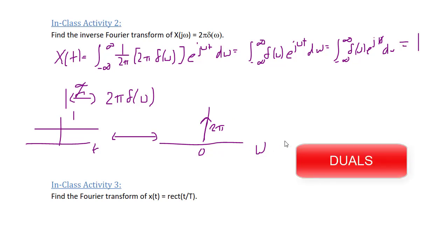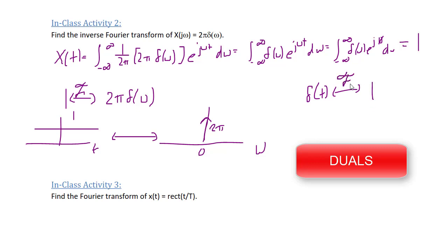Activities one and two are called duals. When you have an impulse in the time domain, it becomes a constant in the frequency domain. Or, if you have a constant in the time domain, then in the frequency domain you get a scaled impulse.